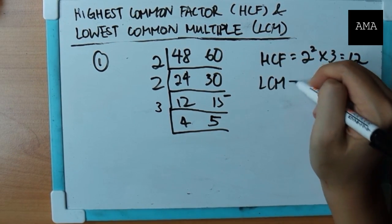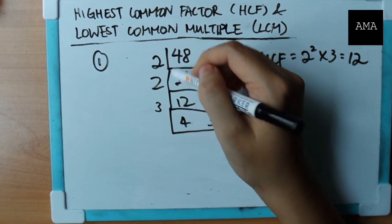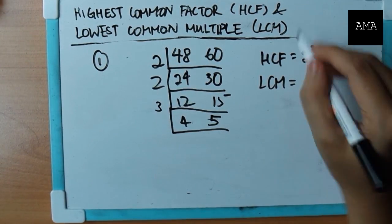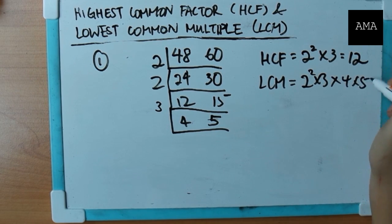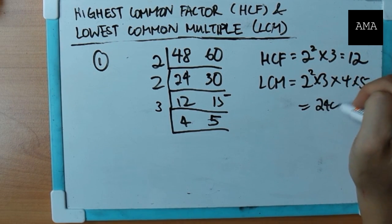Okay, now what about LCM? LCM is just the product of this times the remainder. That's all. So it's just two squared times three times four times five. Two forty.